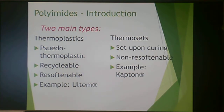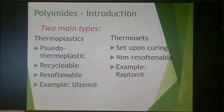There are two main types of polyimides. There's a thermoplastic, which is Ultem — it's called a pseudo-thermoplastic because it's really hard to soften, but you can soften it, and therefore it is recyclable. And then there's a thermoset. Thermosets by definition set upon curing and therefore are non-resoftenable, and Kapton is the thermoset type of polyimide. So Ultem is the thermoplastic, Kapton is the thermoset. If you have a good feeling that I'll be asking you this on a quiz or an exam, you'd be right.